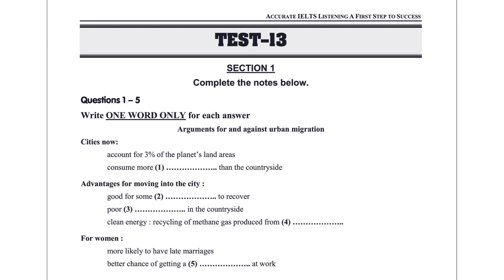Good afternoon and welcome to my talk on urban migration today. The world has experienced unprecedented urban growth in the recent decade. As much as 3% of Earth's landmass has been urbanized, an increase of at least 50% over previous estimates. Today, people living in cities already outnumber those in rural areas, and the trend does not appear to be reversing.